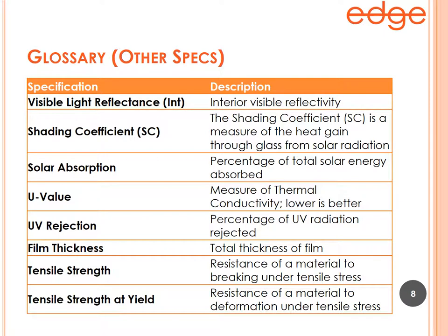Now for the 'other specs' — these are not irrelevant, or they wouldn't be on the specification cards, but if you don't remember the definition, just pause and check the glossary because they come up less frequently. Interior visible reflectivity applies to dual-reflective products that have different reflectivity inside and out. Shading coefficient and solar heat gain coefficient are just ratios of one another, so the shading coefficient moves with the SHGC.